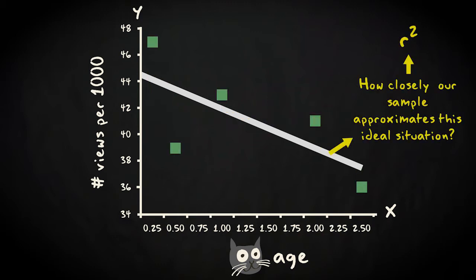R squared tells us how closely our sample approximates this ideal situation. It tells us, out of all the variation in the response variable popularity, what proportion is explained by the predictor cat age.